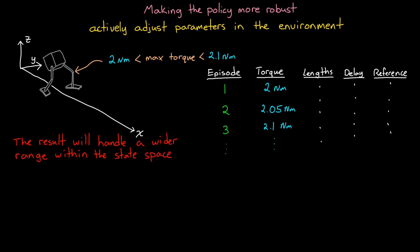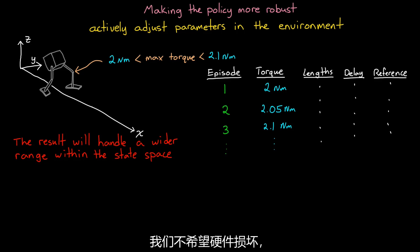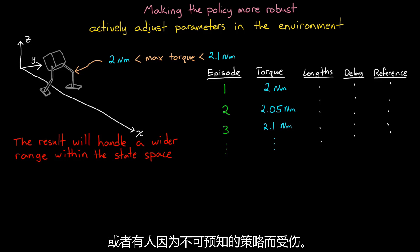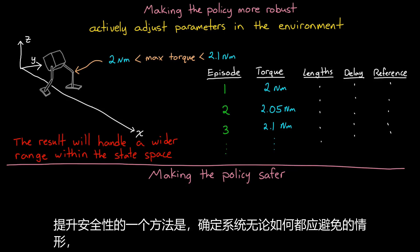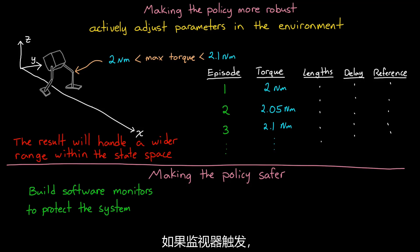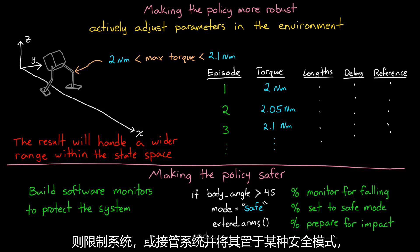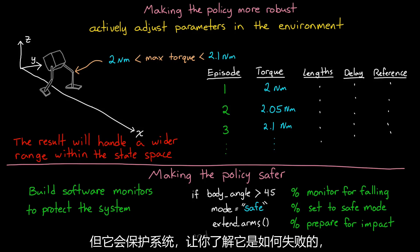This addresses robustness, but it still doesn't give us guarantees that the policy will do the right thing on the hardware. One thing we don't want is for the hardware to get damaged or someone to get hurt because of an unpredictable policy. So we need to increase the overall safety of the system. One way to do this is by determining situations that you want the system to avoid no matter what, and then building software outside of the policy that monitors for that situation. If that monitor triggers, constrain the system or take over and place it into some kind of safe mode before it has a chance to cause damage. This doesn't prevent you from deploying a dangerous policy, but it will protect the system, allowing you to learn how it fails and adjust the reward and training environment to address that failure.